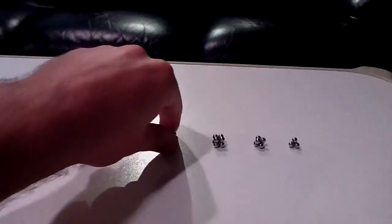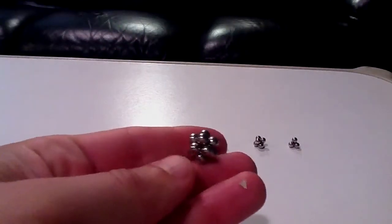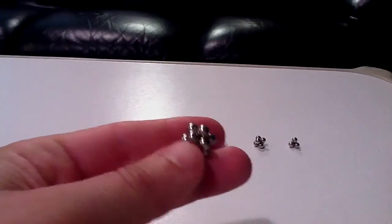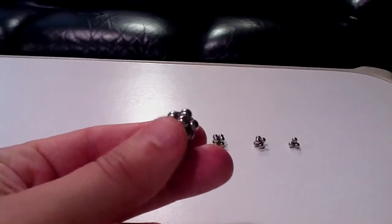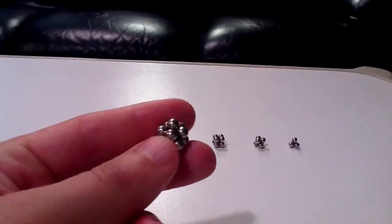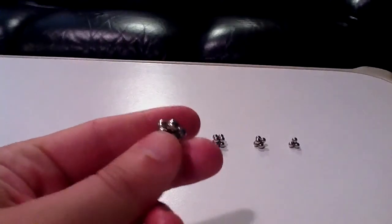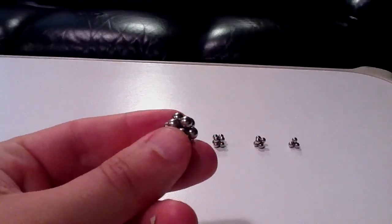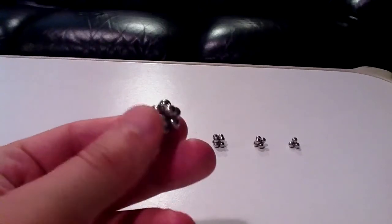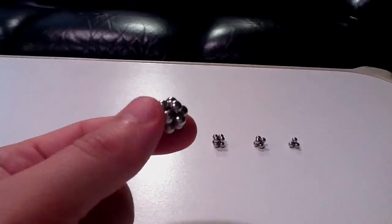This guy here is an icosahedron and it's made up of twelve buckyballs. And if you can see triangles here, well there should be twenty of them. So lots of those.